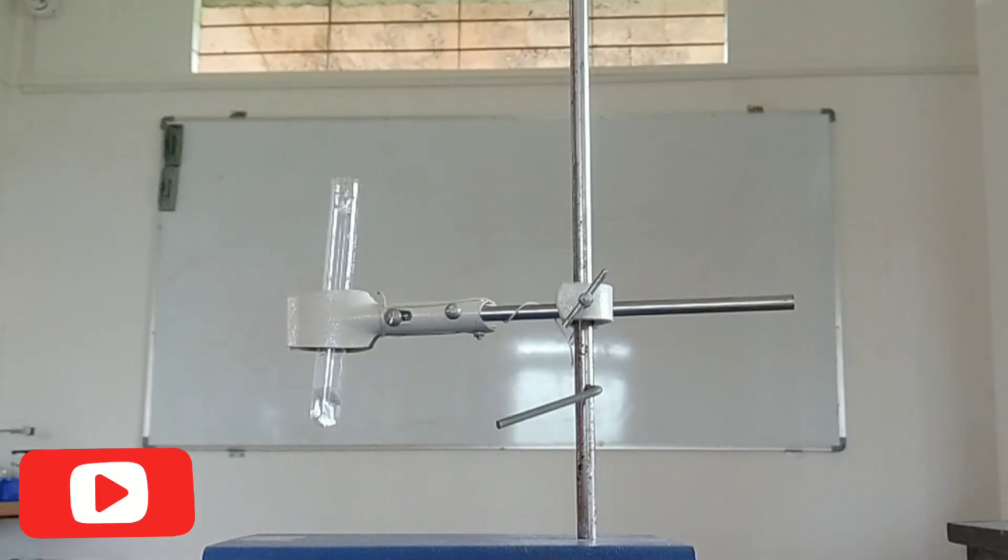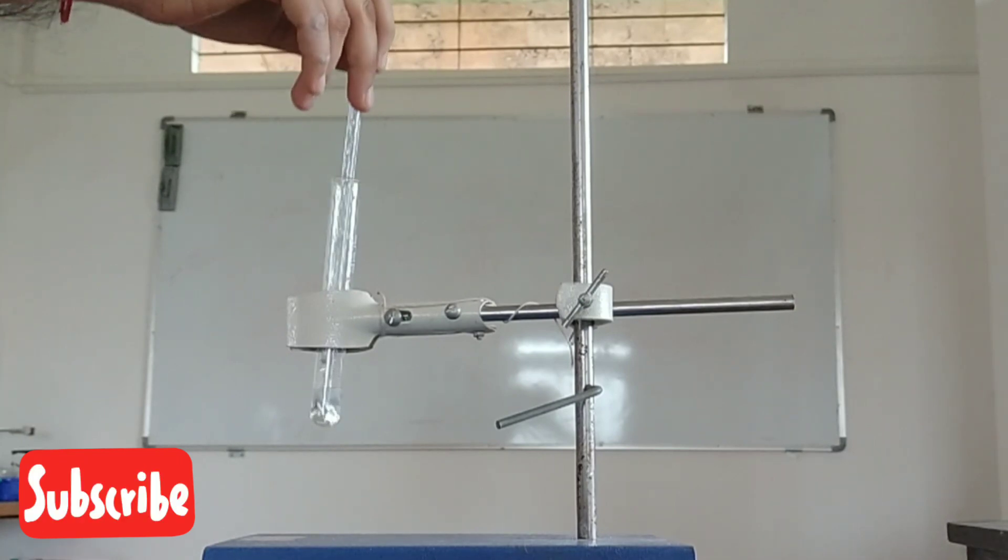I have taken hydrochloric acid in a test tube. Now I will add aluminium metal, that is aluminium foil pieces, to this test tube.